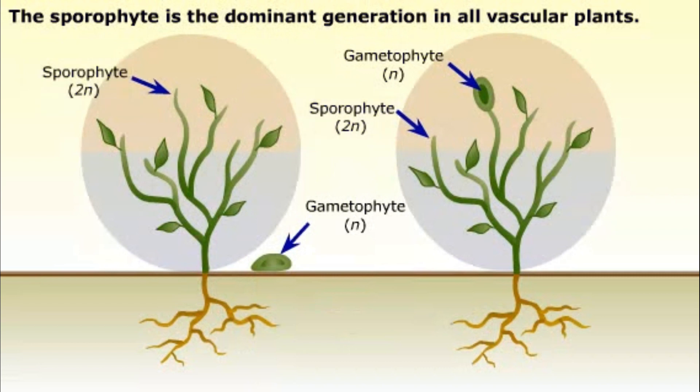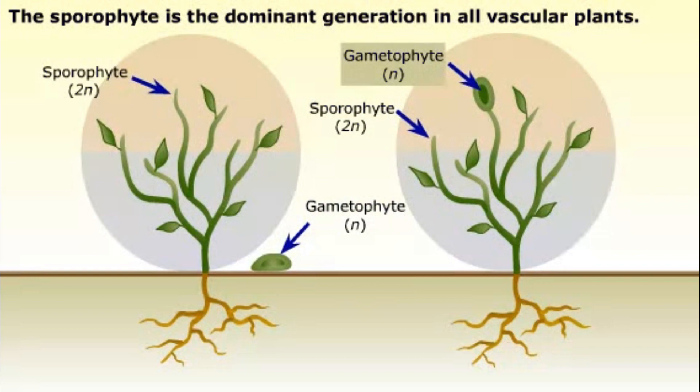In some types of vascular plants, the gametophyte is a small, free-living organism. In others, the gametophyte remains dependent on the sporophyte for most or all of its lifetime.